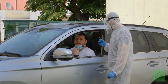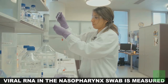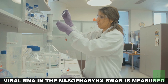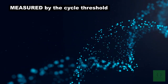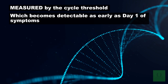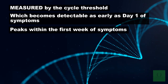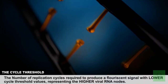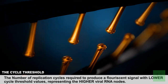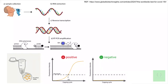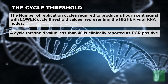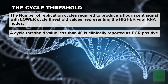In most individuals with symptomatic COVID-19 infection, viral RNA in the nasopharyngeal swab is measured by the cycle threshold, which becomes detectable as early as day one of symptoms and peaks within the first week of symptom onset. The cycle threshold is the number of replication cycles required to produce a fluorescent signal, with lower cycle threshold values representing higher viral RNA loads. A cycle threshold value of less than 40 is clinically reported as PCR positive.